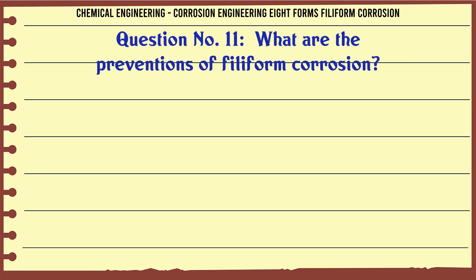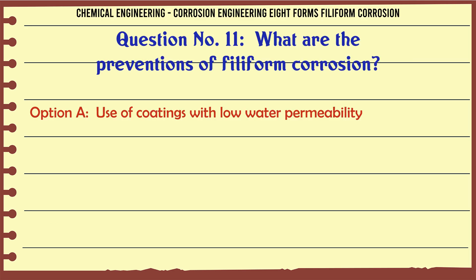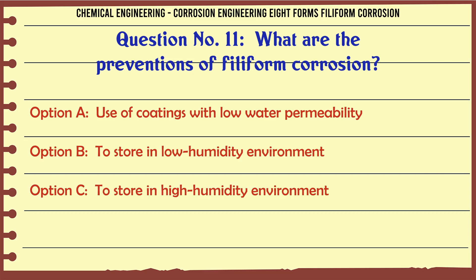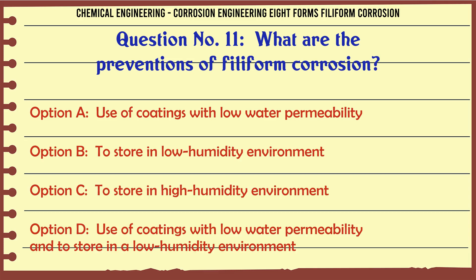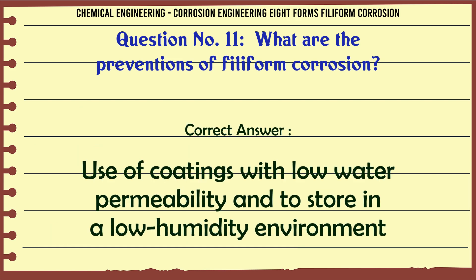What are the preventions of filiform corrosion? a. Use of coatings with low water permeability. b. To store in low humidity environment. c. To store in high humidity environment. d. Use of coatings with low water permeability and to store in a low humidity environment. The correct answer is d: use of coatings with low water permeability and to store in a low humidity environment.